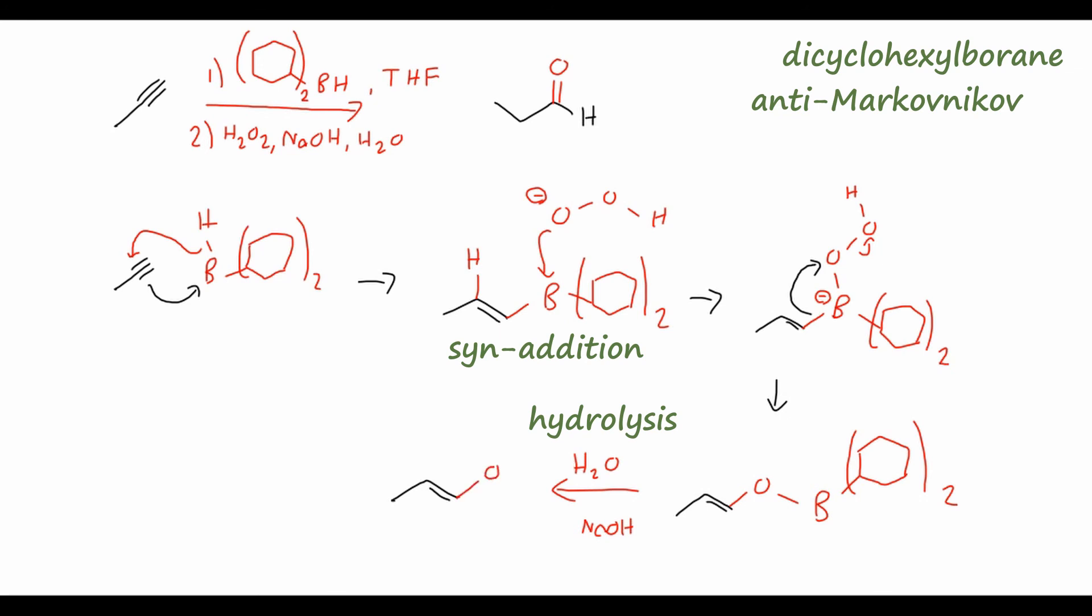It will also tautomerize to, this time the aldehyde, because the oxygen is on the primary carbon. The reason we use a sterically hindered borane reagent for this reaction is so that we don't get further reactions with the alkene. We don't want the intermediate alkene to react with more boranes to form the alcohols, we want this to go directly to the aldehyde, which we can accomplish with this dicyclohexyl borane reagent.